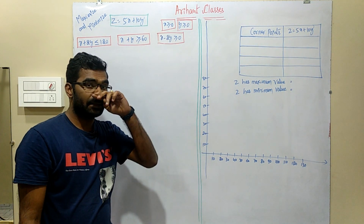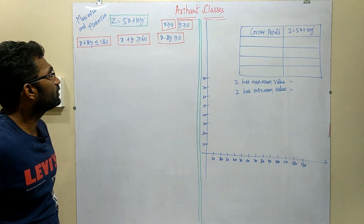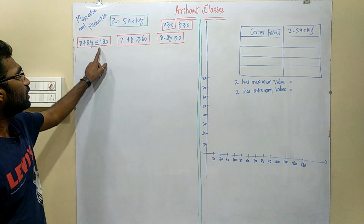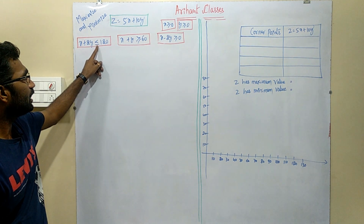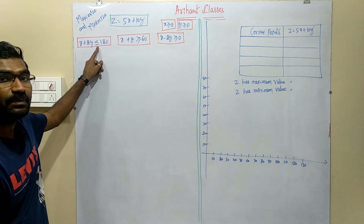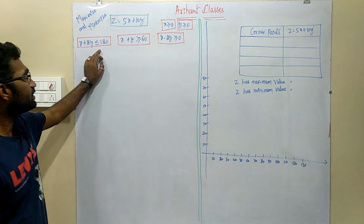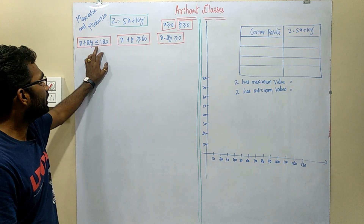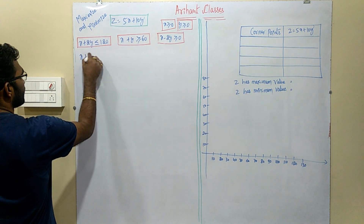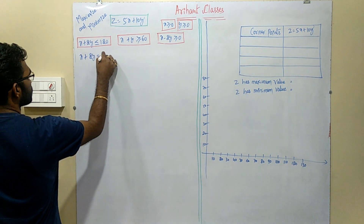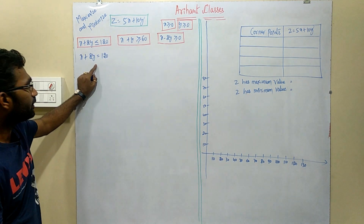To find the feasible region, I have to convert this plane. If you see this inequality, this represents the plane. I have to convert it to a straight line. To convert to a straight line, you should take it as equal to. Therefore what you can write here is x plus 2y equals 120. Now it is a straight line.